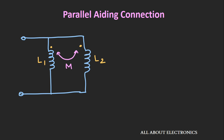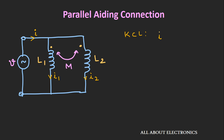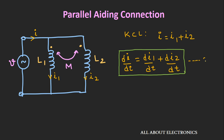Let's say we have two inductors L1 and L2 connected in parallel. When we apply an AC voltage source, current starts flowing through the combination. I1 is the current flowing through inductor L1, and I2 is the current flowing through inductor L2. These inductors are connected so that the flux generated adds to each other — a parallel adding connection. Applying KCL: I = I1 + I2. Differentiating: dI/dt = dI1/dt + dI2/dt. Let this be equation 1.